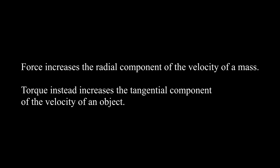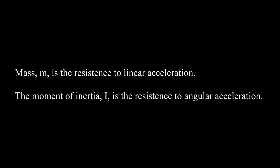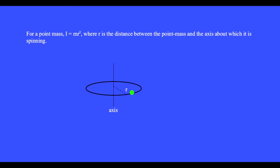Force increases the radial component of the velocity of a mass. Torque instead increases the tangential component of the velocity of an object. Mass m is the resistance to linear acceleration. The moment of inertia I is the resistance to angular acceleration. For a point mass, the moment of inertia I equals mr squared, where r is the distance between the point mass and the axis about which it is spinning.